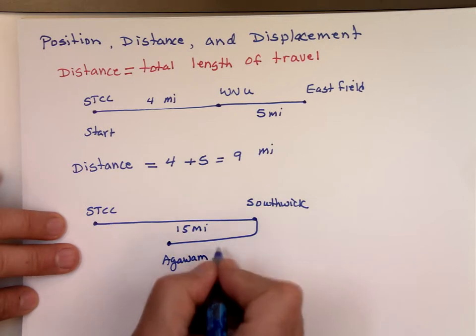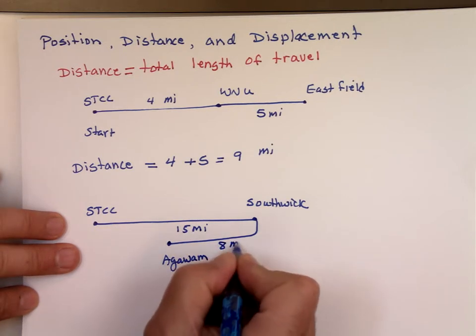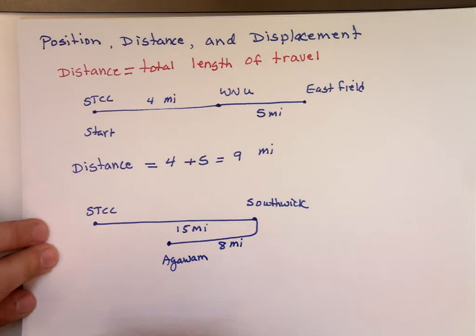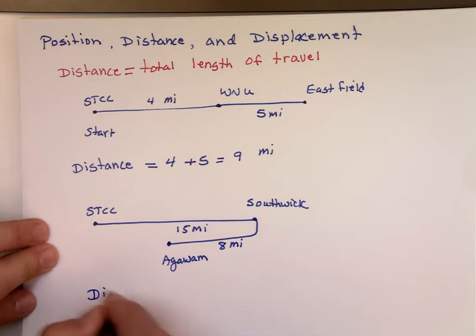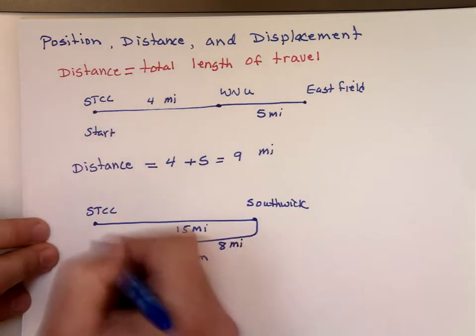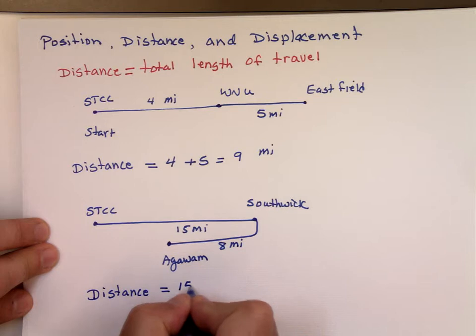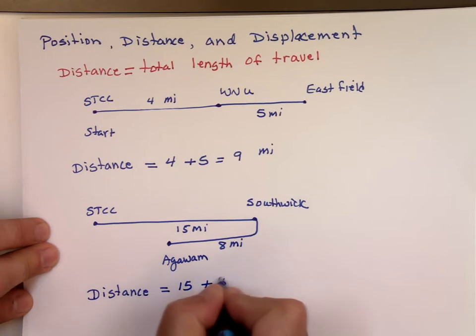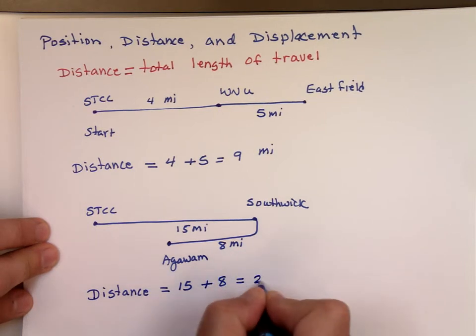From Southwick to Agawam, let's say it's about eight miles. What is the distance traveled? Your distance is, add all these distances, which is the 15 miles plus the eight miles you traveled, 23 miles.